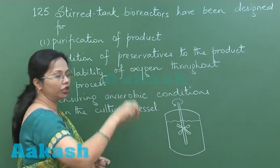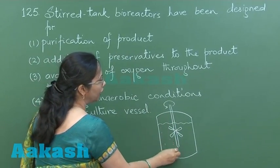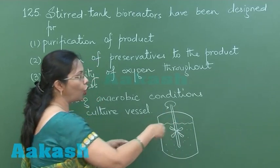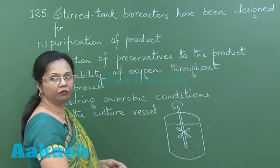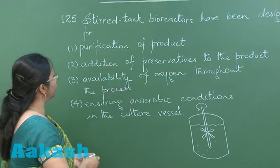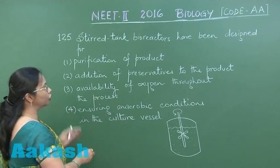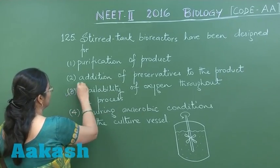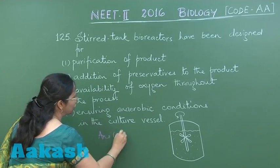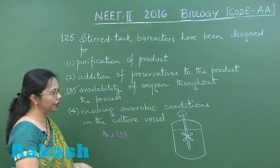So when this stirrer is continuously being rotated, there is even distribution of oxygen all over the medium. So out of these choices, we have availability of oxygen throughout the process. So our answer is 3, and we can move on to question 126.